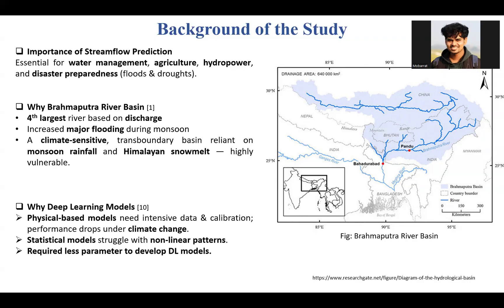Due to monsoon flooding and Himalayan snowmelt, major flooding is likely to occur. Finally, why I used a deep learning model for this task: hydrological models like HEC-HMS or SWAT require heavy calibration and struggle under non-linear climate data, and their performance often drops due to climate change. Deep learning, on the other hand, can learn non-linear relations with fewer parameters.